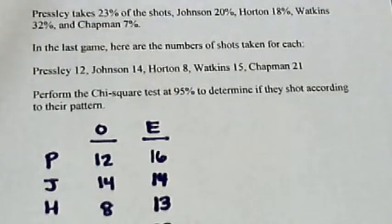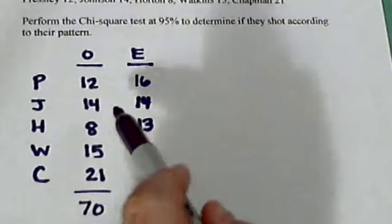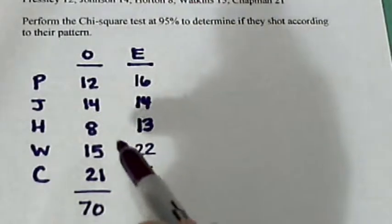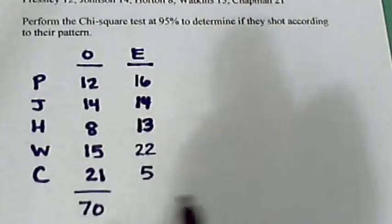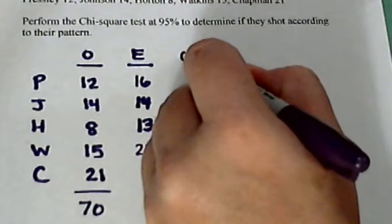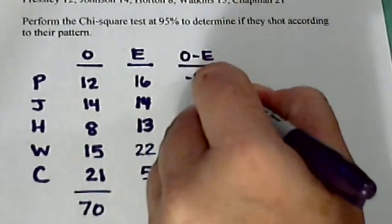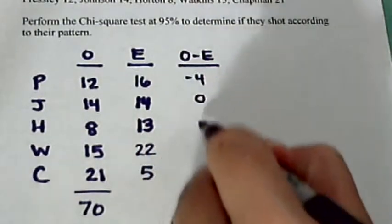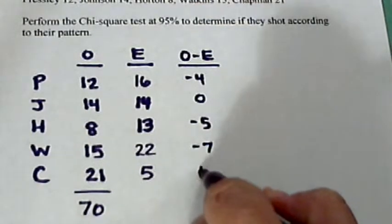By looking at these numbers, it appears like they didn't quite do their usual. Johnson was right on. Presley and Horton were pretty close, but Watkins and Chapman were way off. But let's continue the problem, and let's just make sure. The next column, we're going to subtract these two. So we have -4, 0, -5, -7, 16.